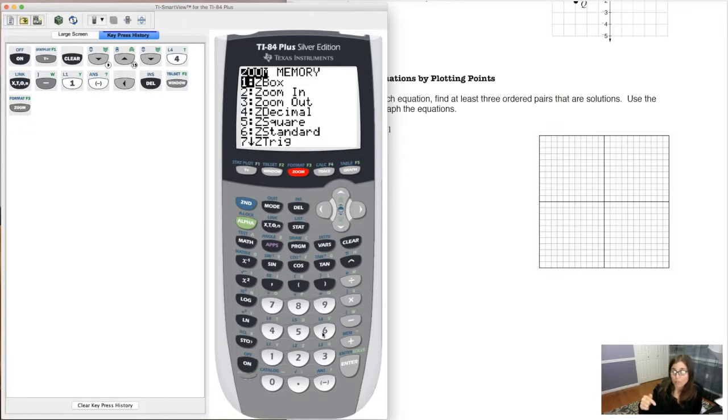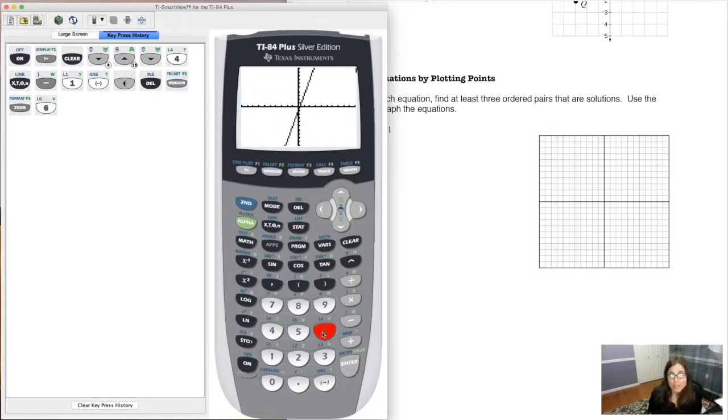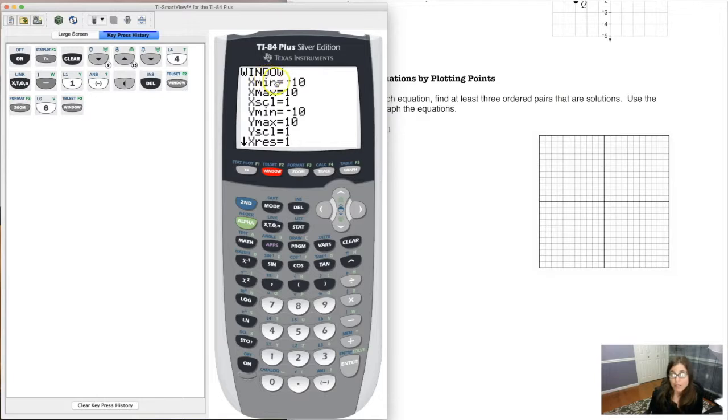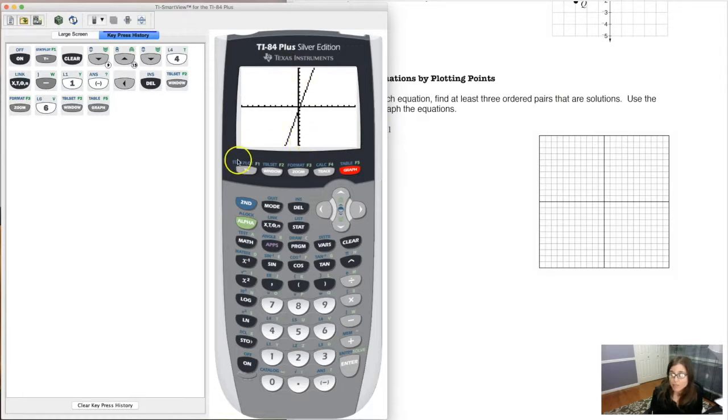You can do it two ways. You can scroll down to 6 and hit enter, or you can just hit the number 6. I'm lazy, so I'm going to just hit 6, and here comes our line, and it looks like the one that we had graphed in example 2, and now if I go back and I take a look at my window, you can see my x-axis goes from negative 10 to 10, and then my y-axis goes from negative 10 to 10, and that's what's happening here. This is negative 10, positive 10 on the x-axis. This is negative 10 to positive 10 on the y-axis,